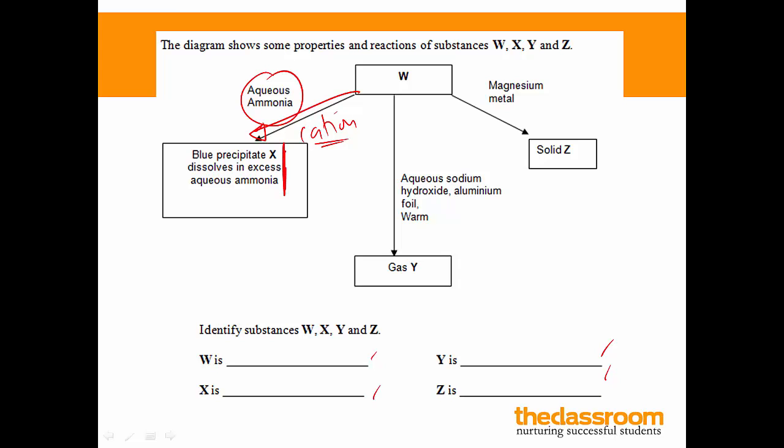Now once again, if you get a blue precipitate, this means that you have copper 2-hydroxide being formed, meaning to say that W contains copper 2-plus ions. So not too difficult here. Now if you go down the arrow in the middle, you are testing for an anion. How do I know this? Because we're not adding aqueous ammonia or sodium hydroxide. So if you add anything else, usually you're testing for the anion.